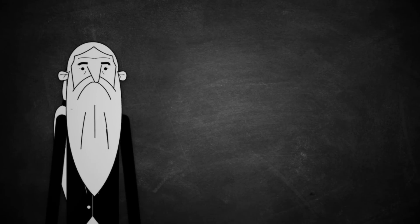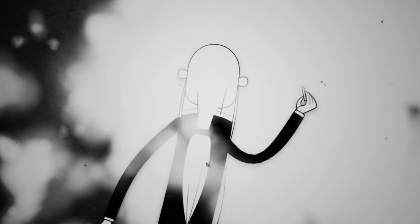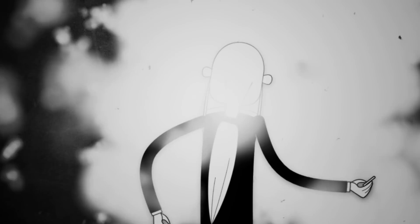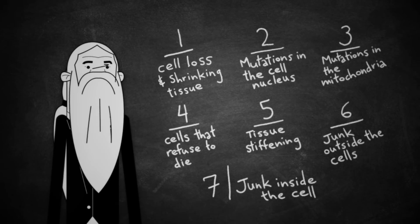De Grey says all the cellular and molecular decay behind diseases of aging can be classified into just seven major categories. Even better, he says we can fix all of this damage.